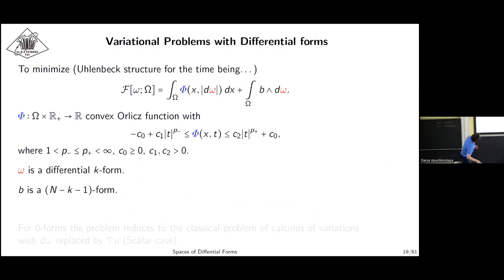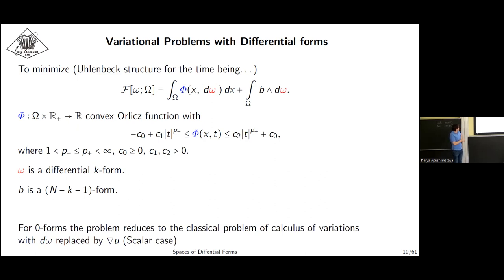Lavrentiev problems for differential forms. For the time being we work with what can be called the isotropic index structure, because here we have dependence only on the modulus of the exterior derivative. Phi is an Orlicz function with general growth condition, and B is also a form. This is kind of generalization of the previous setting. In the previous setting we worked with functions, which is just zero form.